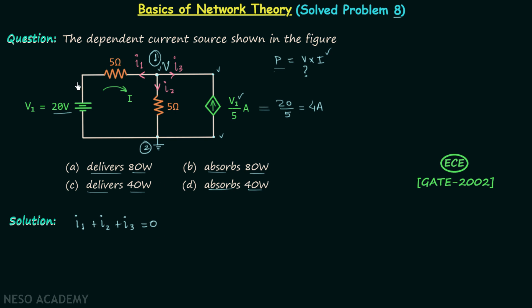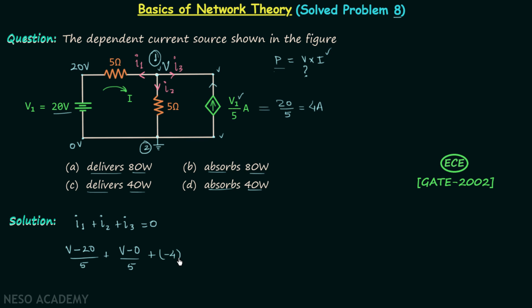I1 equals (V minus 20) divided by 5, because the other terminal is at 20 volts while the reference is 0 volts. I2 equals V divided by 5. I3 equals minus 4 amperes, because 4 amperes flows in that direction and I3 is defined in the opposite direction.